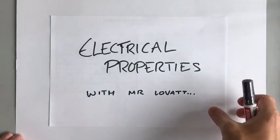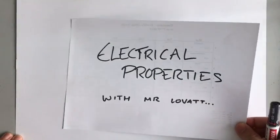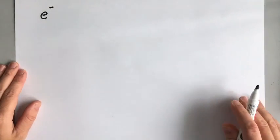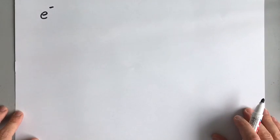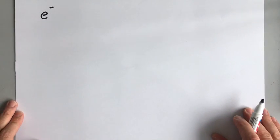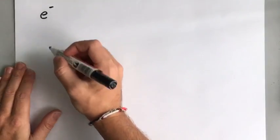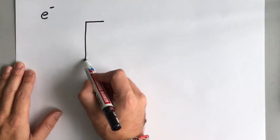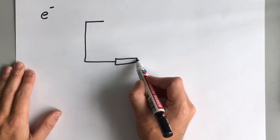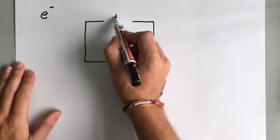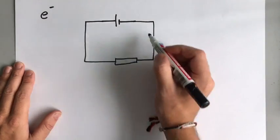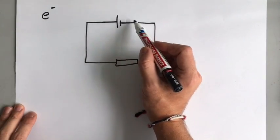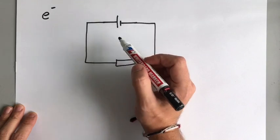This is a GCSE video about electrical properties. We saw in the last video that electrons have a negative charge, and it's electrons that we rely on for electricity. The negative charge can move around a circuit, so if we have a complete circuit made of metal wires — metal conducts electricity — then electrons can move from the battery all the way around the circuit and back to where they started from.